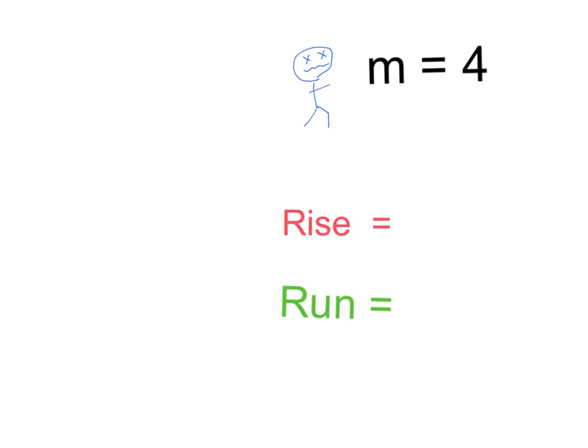Okay, last thing I want to show you is if you have a slope of, say, a whole number like m equals 4, how are we going to find our rise? How are we going to find our run? Remember when we simplified, we could simplify, let's say, 4 over 1 to 4.